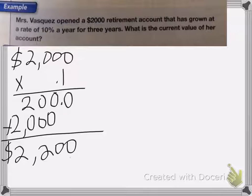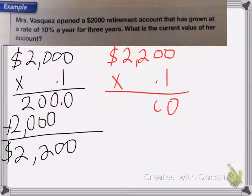Now the second year, she starts with $2,200, and I'm going to multiply it by 0.1 again. Zero, two, two, one decimal point over. So she gets $220 the second year.